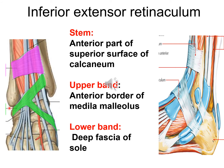Inferior extensor retinaculum is a Y-shaped band of deep fascia situated in front of the ankle joint and to the proximal part of the dorsum of foot. The stem of the Y lies laterally and the upper and lower bands lie medially. The stem of the Y is attached to the anterior part of the superior surface of calcaneum. The upper band passes upwards and medially and attaches to the anterior border of medial malleolus, whereas the lower band passes downwards and medially and fuses with the deep fascia of the sole.